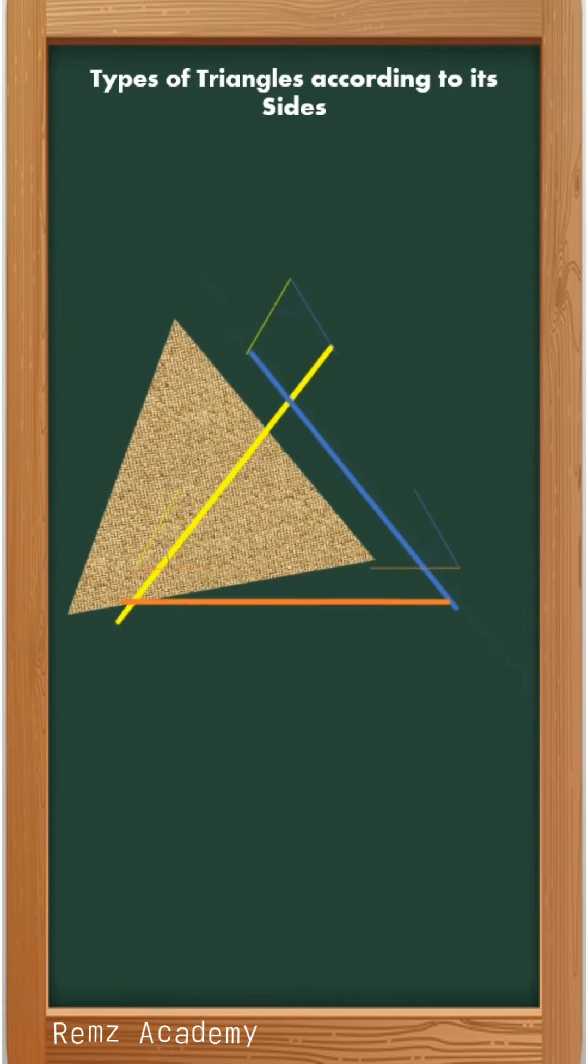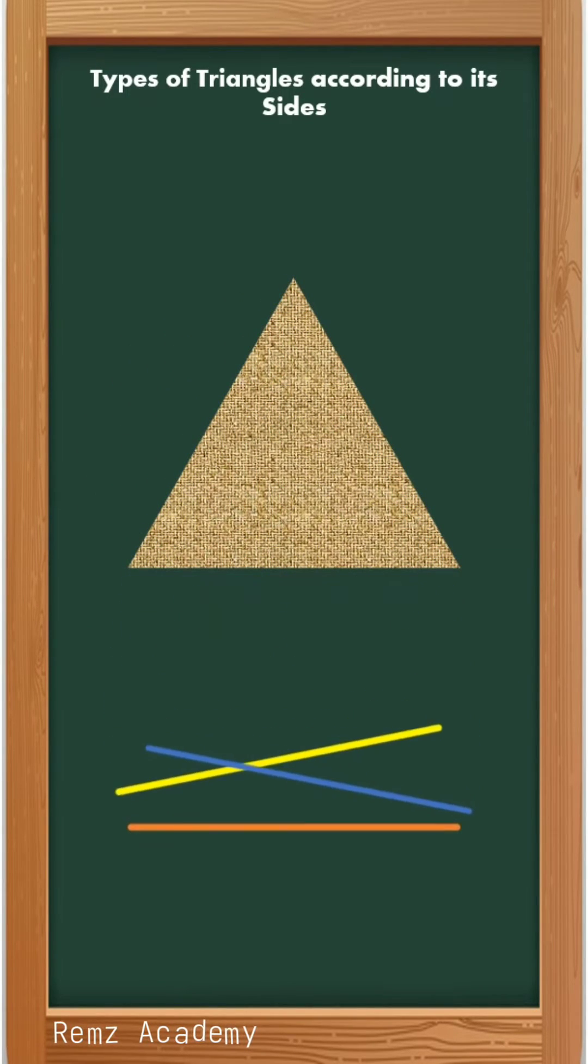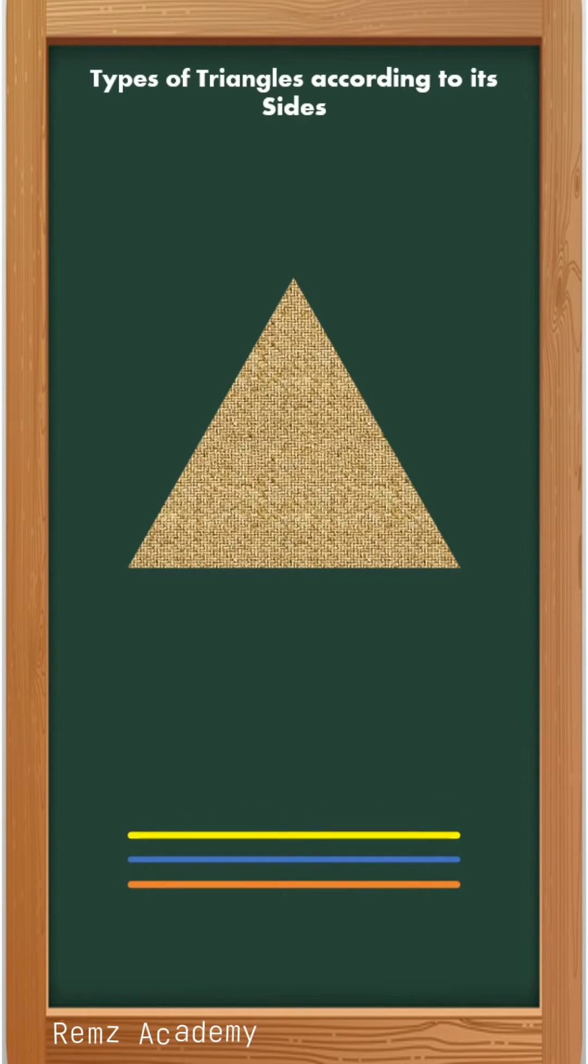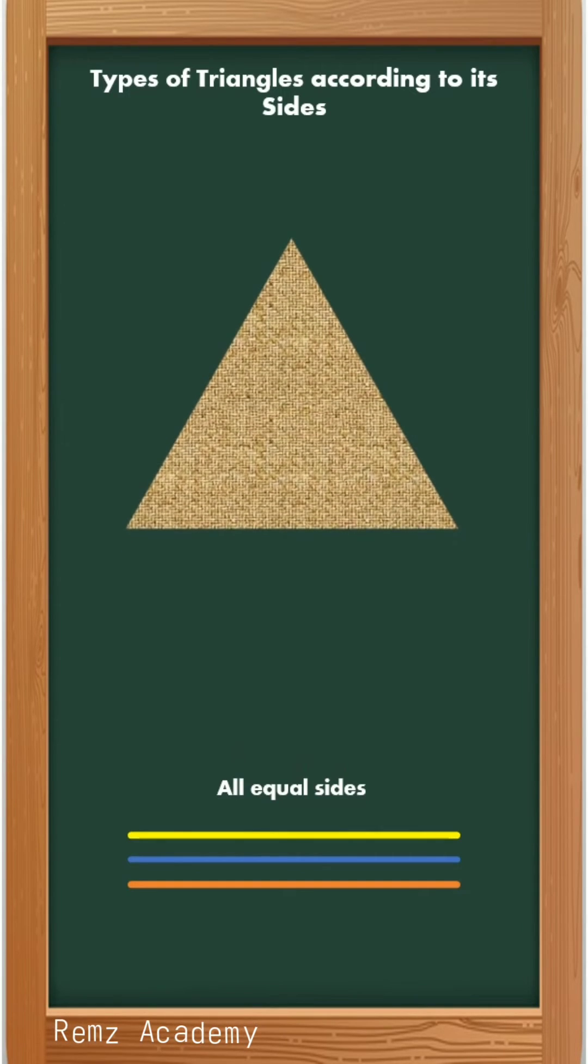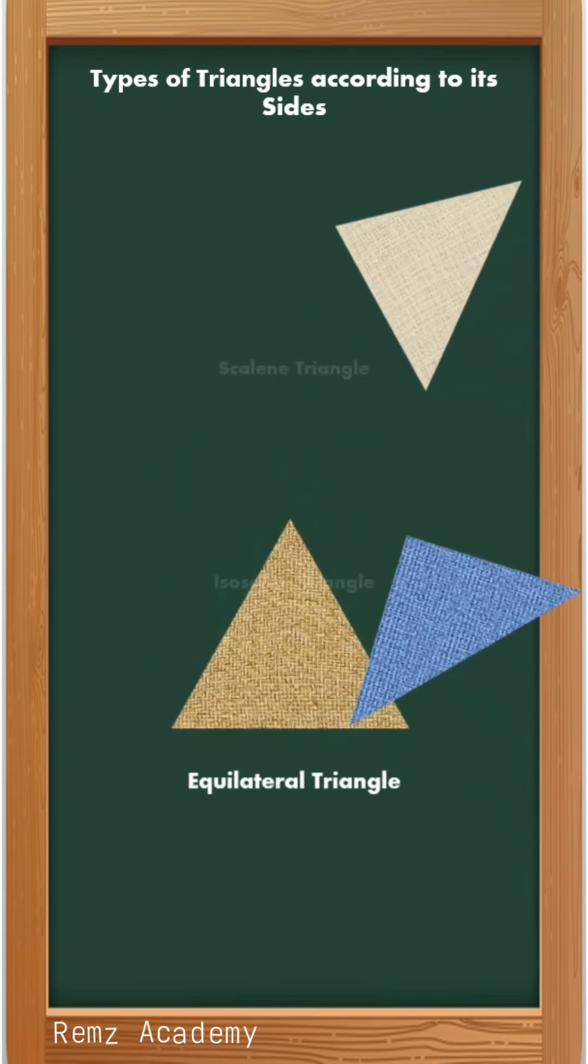And for the last triangle, we will also compare the lengths of its sides. As you can see, the sides are equal. If all the sides of that triangle are the same, we call that an equilateral triangle.